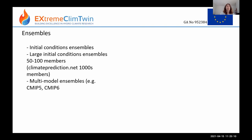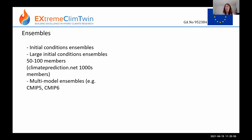Ensembles are groups of climate model simulations where each member runs the same experiment. Initial conditions ensembles use one model with perturbed starting conditions, producing different variability in each member. Large initial conditions ensembles are the same concept with many members. An extreme version is the climateprediction.net initiative, where volunteers contribute computing time to run low-resolution climate model simulations in the background, allowing thousands of ensemble members to be generated.